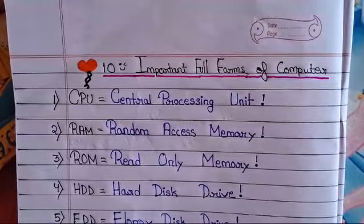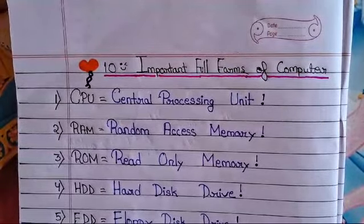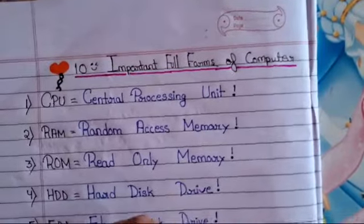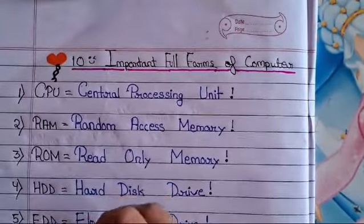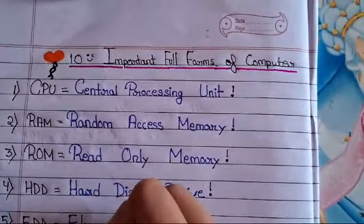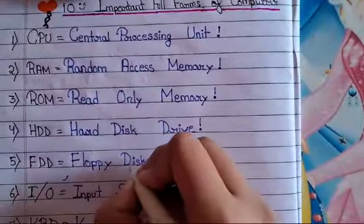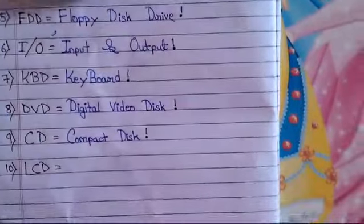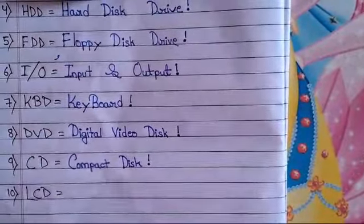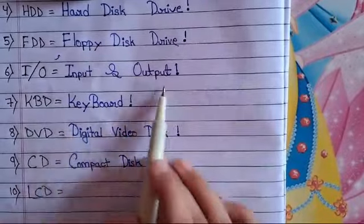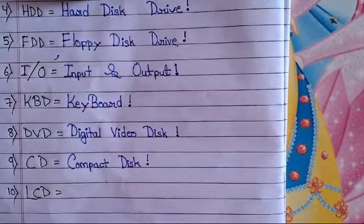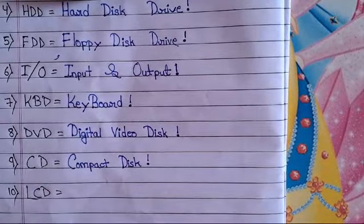Now let's write another five questions. The full forms are: I/O (Input and Output), keyboard, DVD (Digital Video Disk), and CD (Compact Disk).